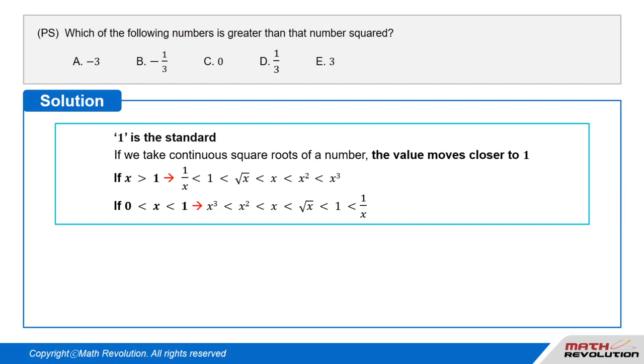1 is the standard. If we take continuous square roots of a number, the value moves closer to 1 with every square root.